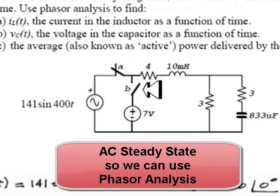That means the circuit is in steady state. The source is AC, the circuit is in AC steady state. We can use phasor analysis.